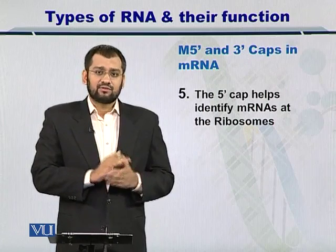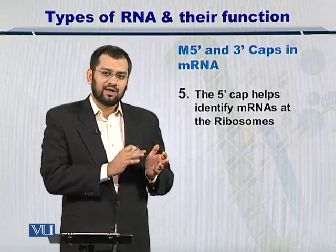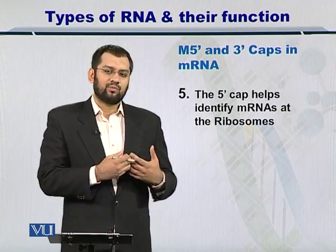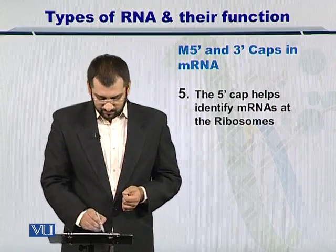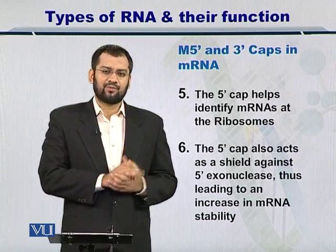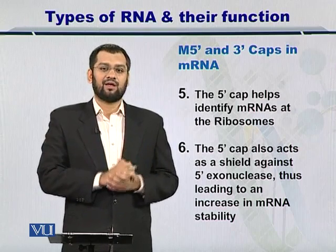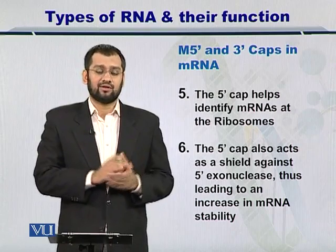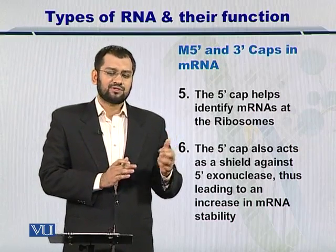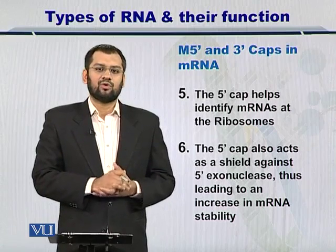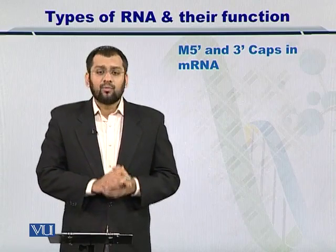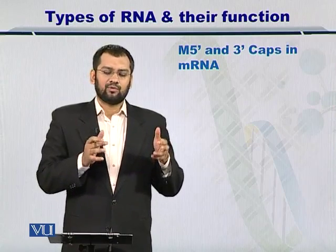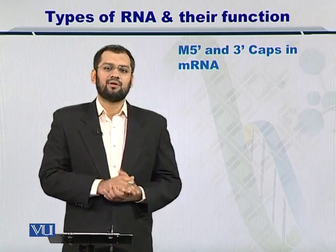Once the mRNA reaches the ribosome sites, the five prime cap helps provide identification that the molecule that has just arrived is an mRNA. Moreover, the cap at the five prime end also helps protect the mRNA from five prime exonucleases. If the mRNA is damaged, the protein that is translated will also not be complete. Together, the five prime end and three prime end provide protection and enhance the stability of the molecule.